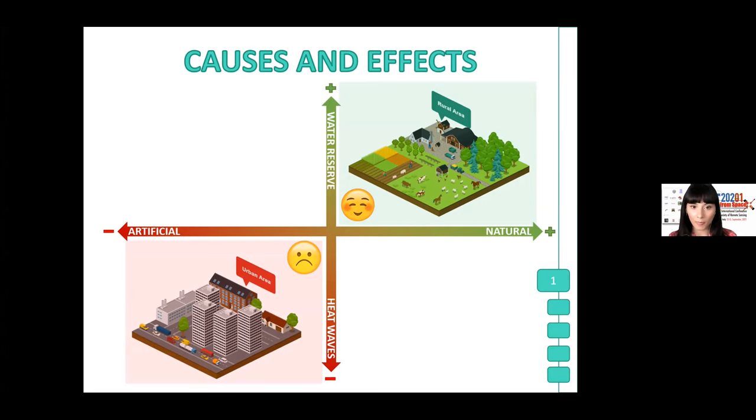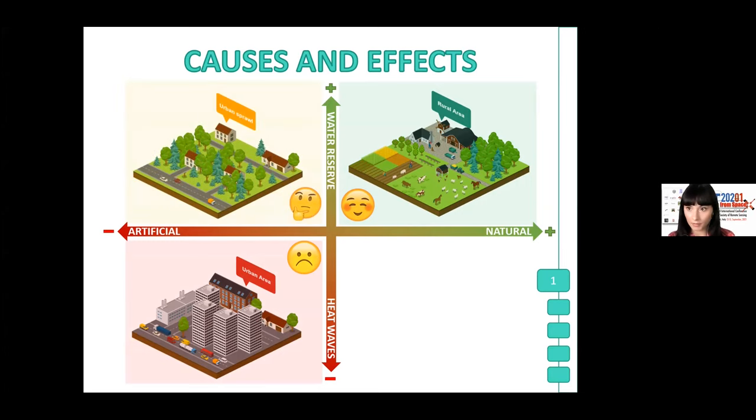In addition, we have an intermediate situation, such as rubble sprawl, in which we have an increase of the degree of the artificiality, but preserving the water reserve.